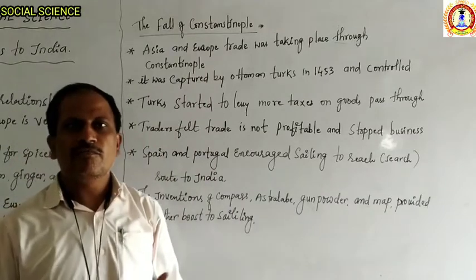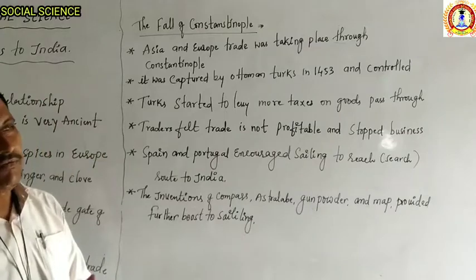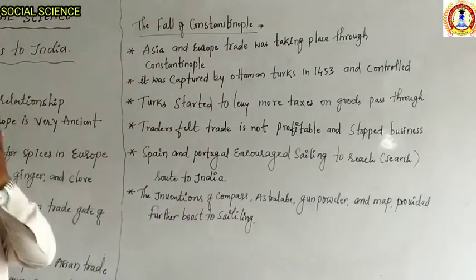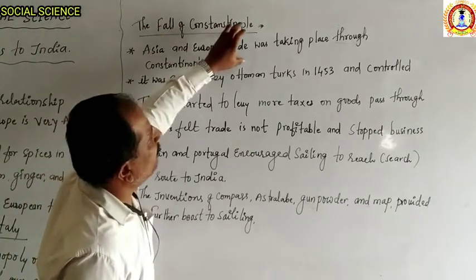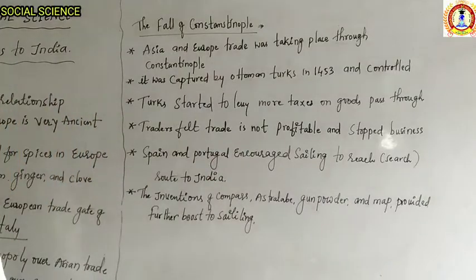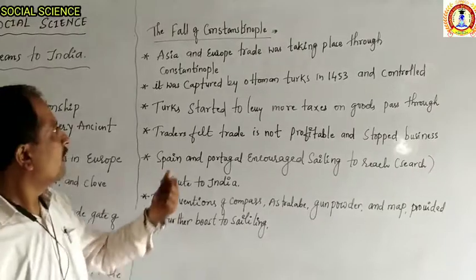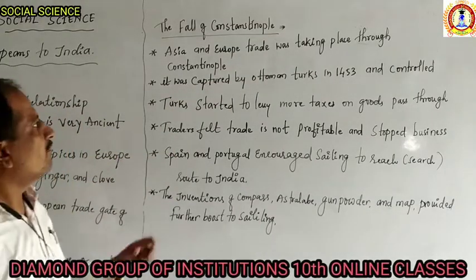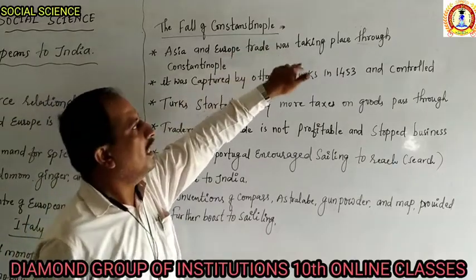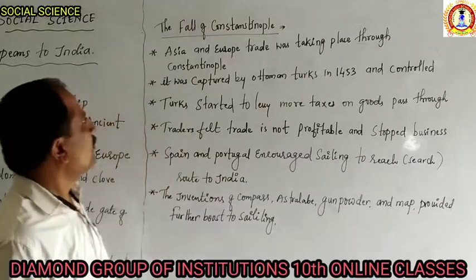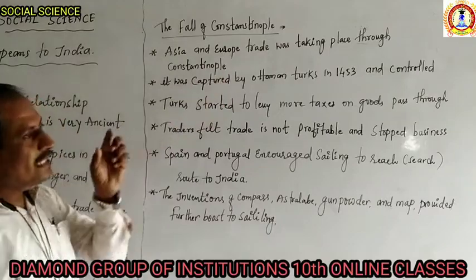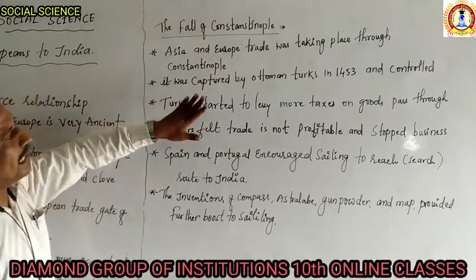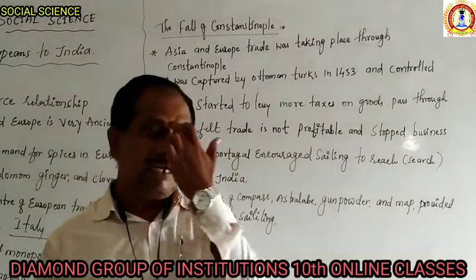The fall of Constantinople created problems between Asian merchants, Arab merchants, and Italian merchants. The first main problem was that Asia-Europe trade was taking place through Constantinople. Constantinople was the center place for both Asia and Europe. Then in 1453, Constantinople was captured by the Ottoman Turks, who took control over it.